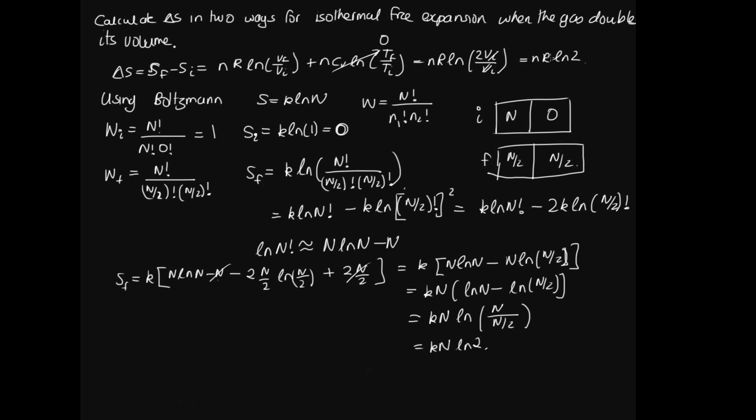But remember that R, the gas constant, is related to Boltzmann's constant through nR, where little n is the number of moles, equals the number of molecules times K. And so we can replace this NK or KN, doesn't matter which order we write it, with nR log 2. And so we've come up with exactly the same expression for entropy using these 2 different methods.